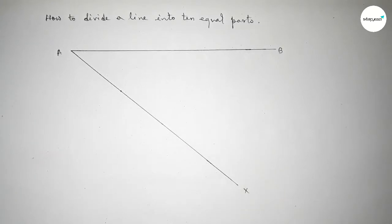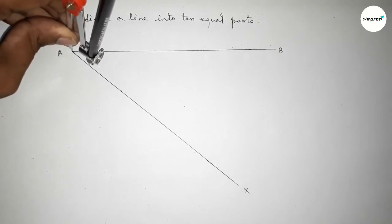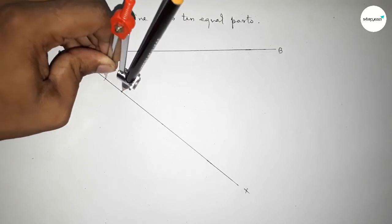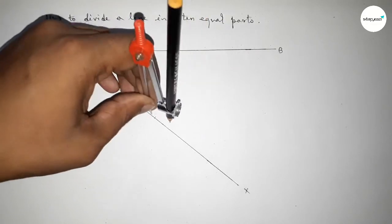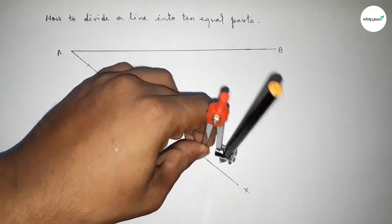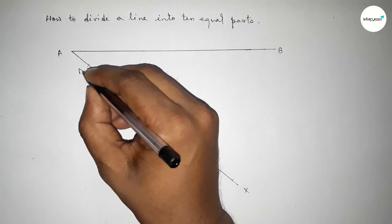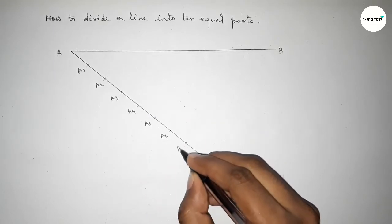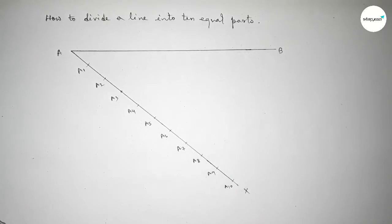Next we have to extend the line using a scale to get point X. Then we have to mark line AX into 10 equal parts using a compass. Taking any length and marking: A1, A2, A3, A4, A5, A6, A7, A8, A9, and A10.